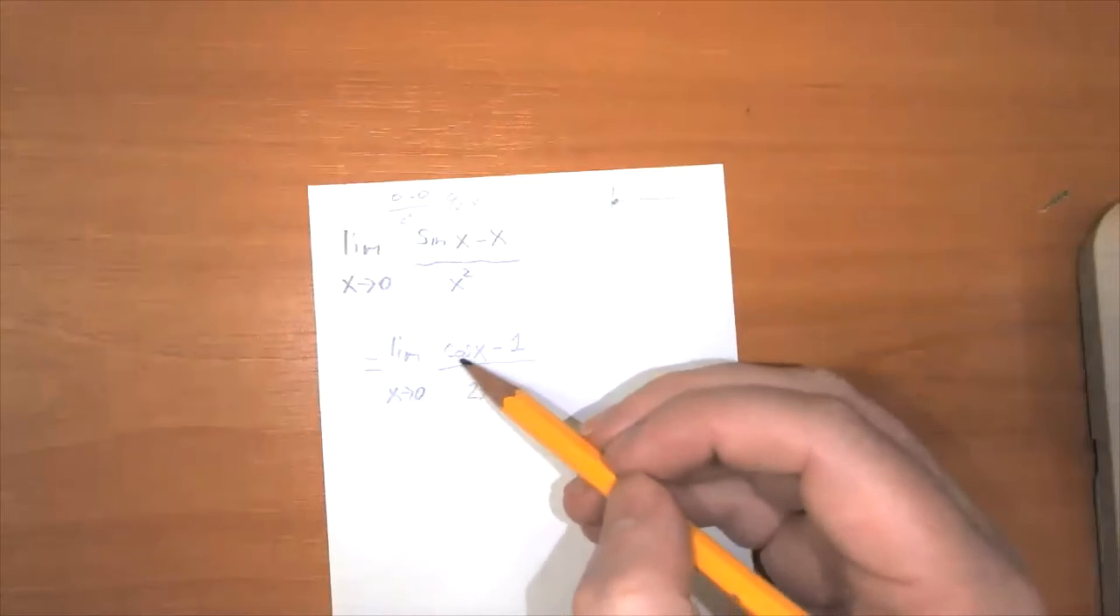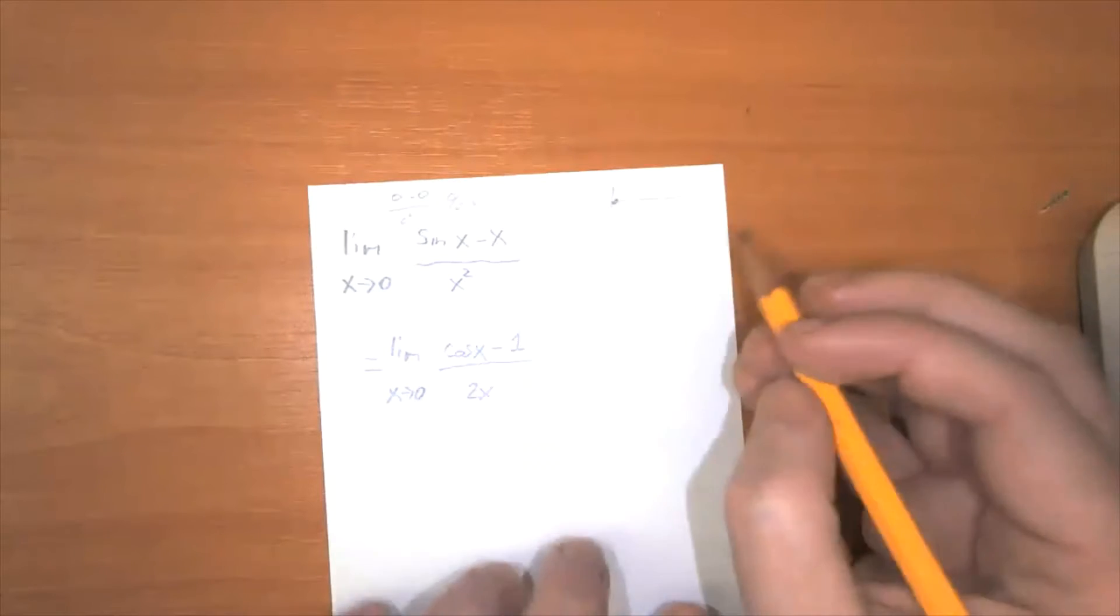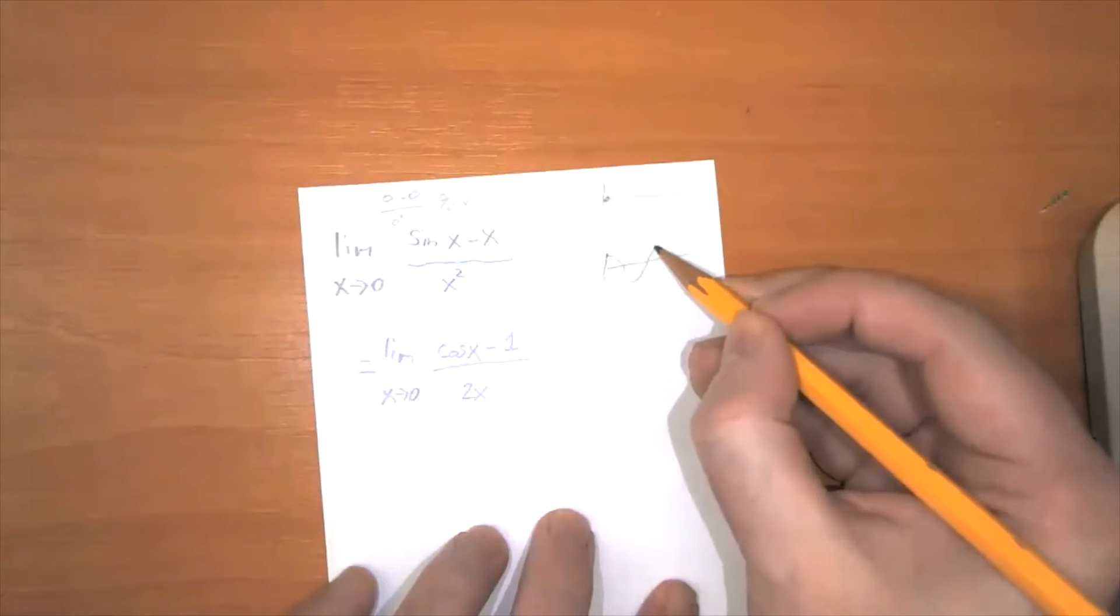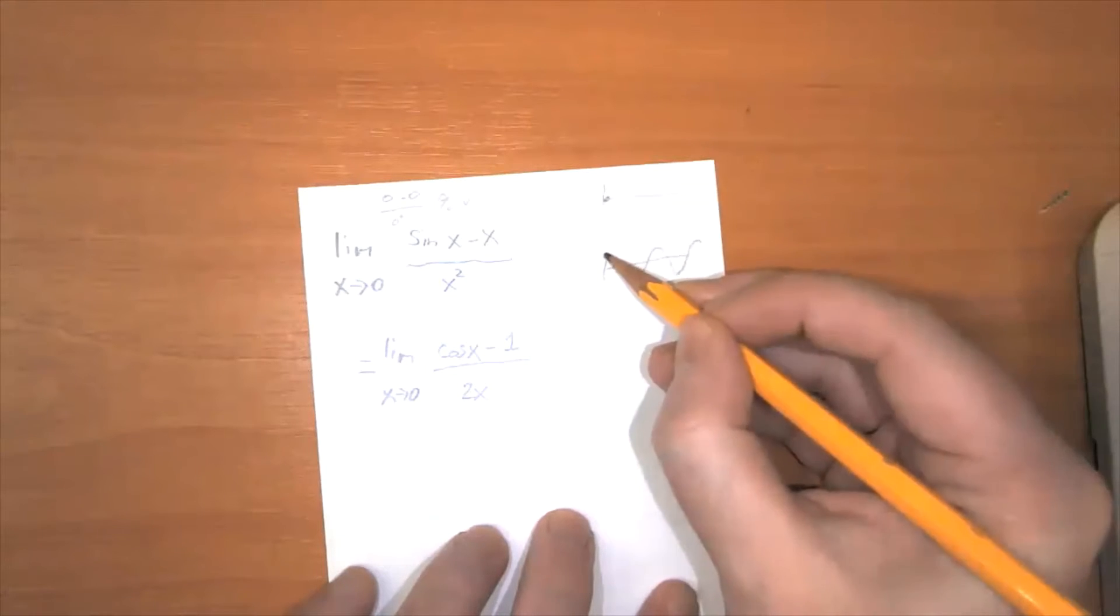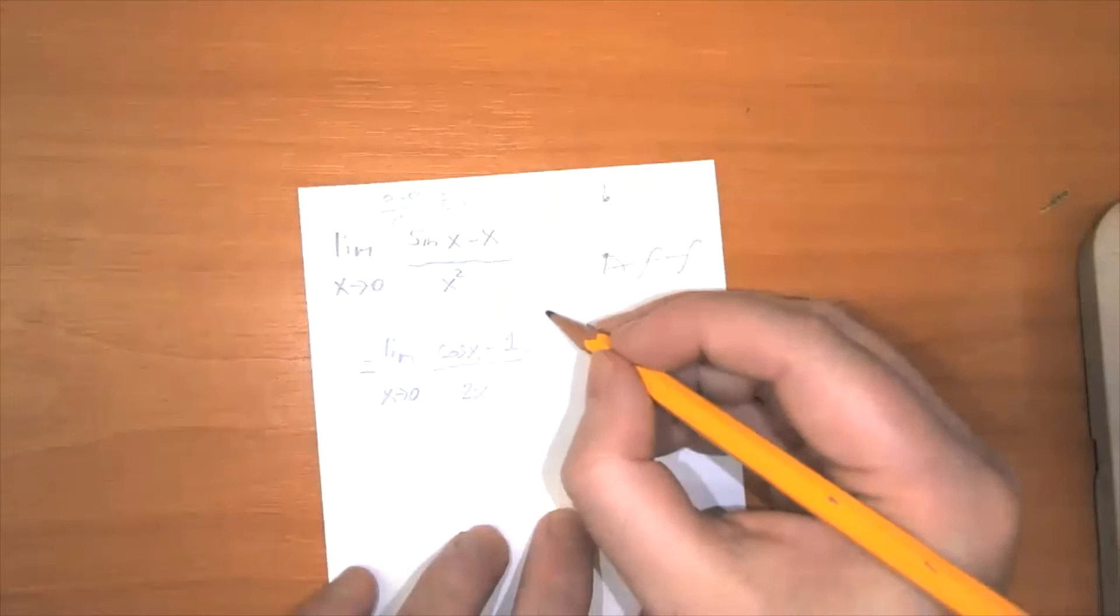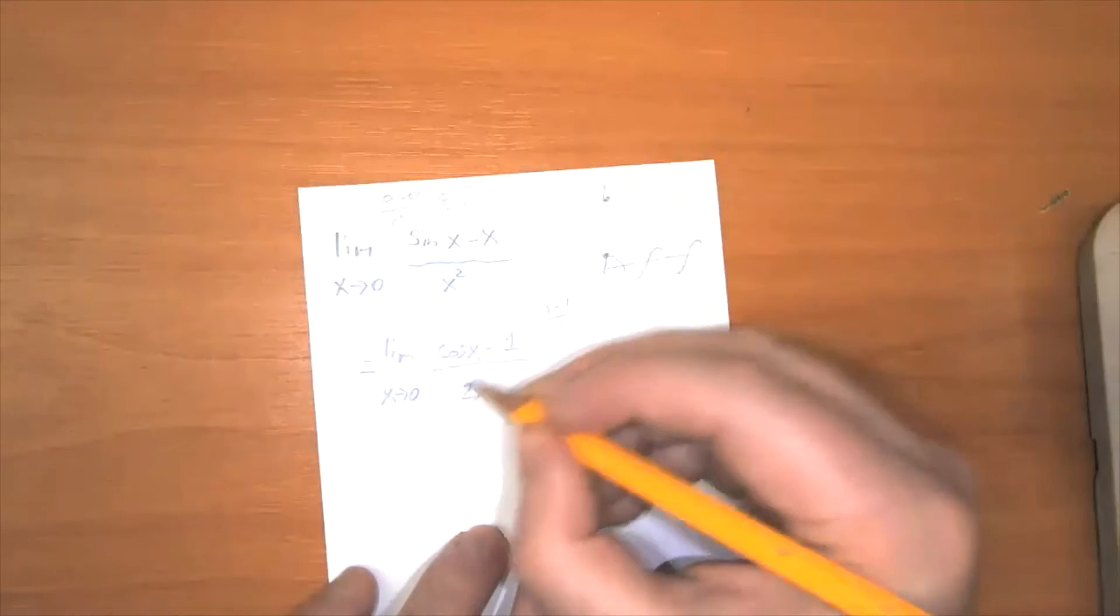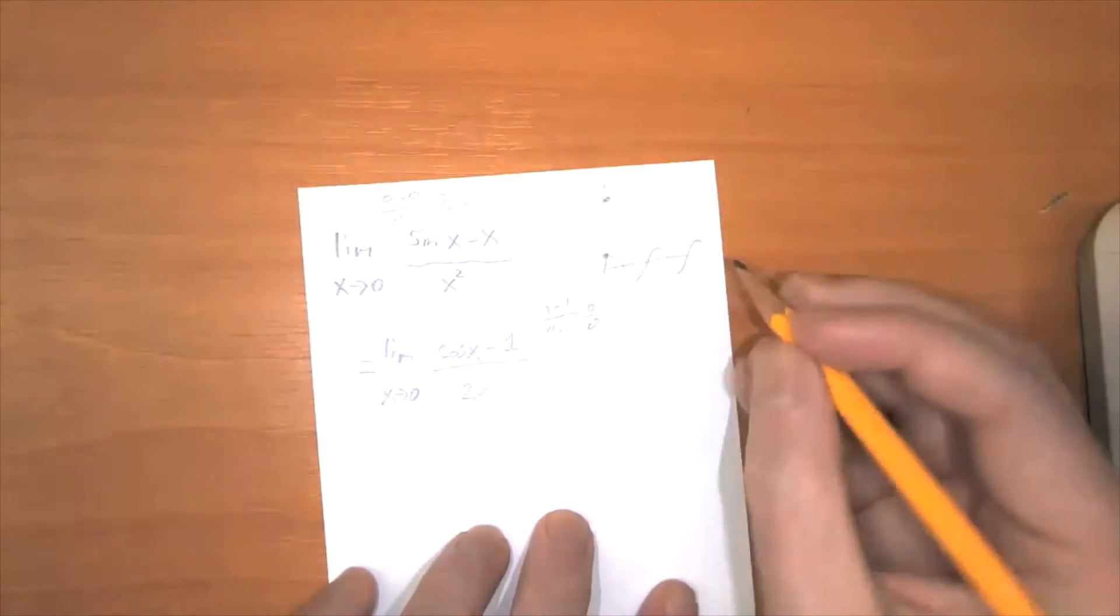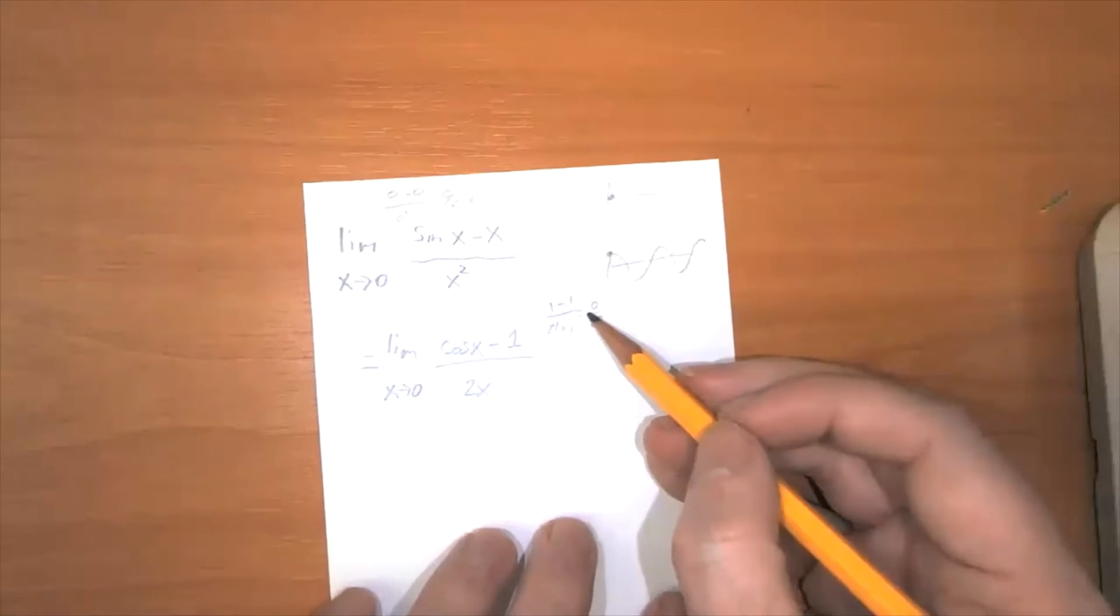Well, we need to take the cosine of zero. And cosine looks like this. So cosine of zero is equal to one. So that's one minus one over two times zero, which is equal to zero over zero. So this is also an indeterminate form.